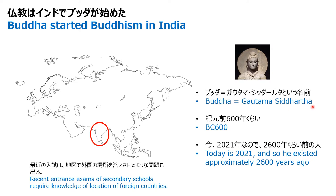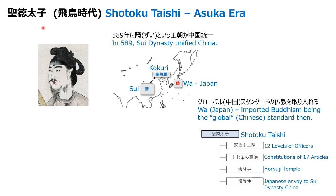Buddha's name was Gautama Siddhartha — he was called Siddhartha at that time. He existed around BC 600, so about 2,600 years ago. He used to be from a family of kings, but he trained himself and started Buddhism. Buddhism is not very popular today in India, but it is popular in Sri Lanka, Thailand, Taiwan, China, Korea, and Japan, so it spread widely across Asia.